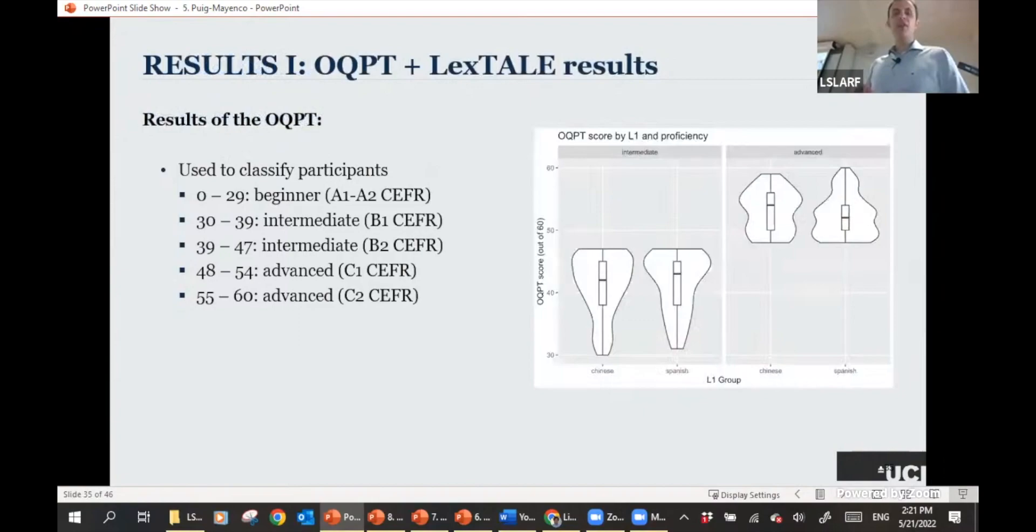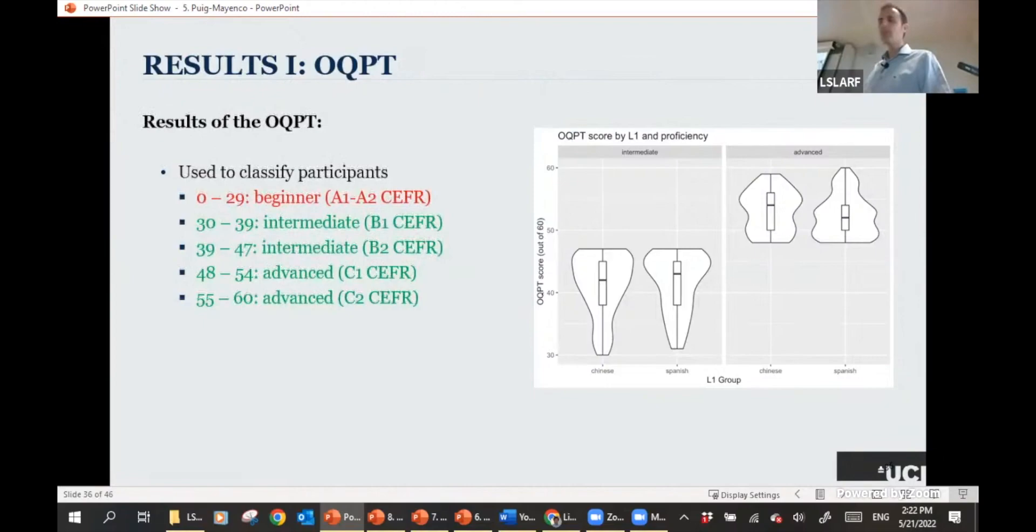So very briefly, the results of the Oxford Quick Placement Test. So the first thing to say is that we used it to classify our participants into whether they were beginner or intermediate or advanced. We used the standardized scoring procedure. And you can see here in the violin plot that, of course, the results are quite neat, but that's because this test was used to categorize them. We've got intermediate participants with lower proficiency than advanced participants, as we would expect. I'm going to report data from these four levels.